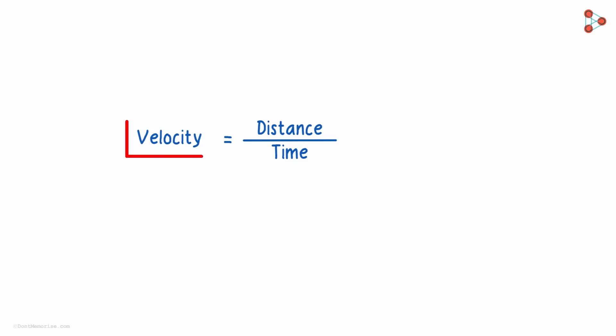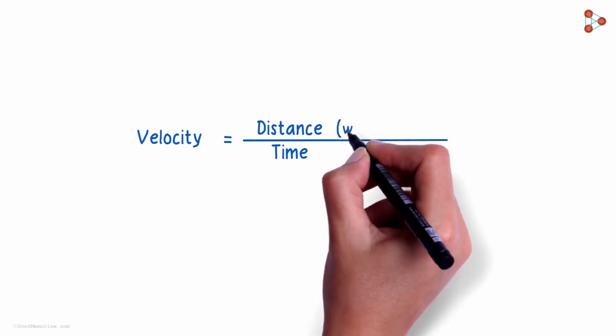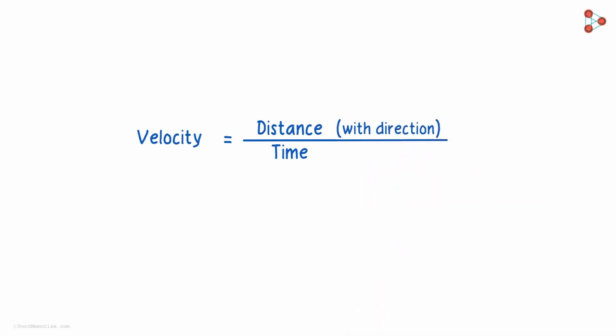We are aware that velocity is a vector quantity and is direction aware. It's speed with direction. What about the standard unit of velocity? The standard unit for velocity is meters per second.